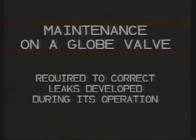In the last segment, we saw how a globe valve is constructed and how it works to control the flow of processed fluid. In this segment, we'll begin to see how to perform some maintenance procedures on a globe valve. Maintenance on a globe valve is usually required to correct leaks that may have developed during its operation. When a valve is found to have a leak problem, it's often overhauled in the shop to repair and replace worn or damaged parts. We're going to see how to perform an overhaul on one type of globe valve. We'll begin with the disassembly of the valve.